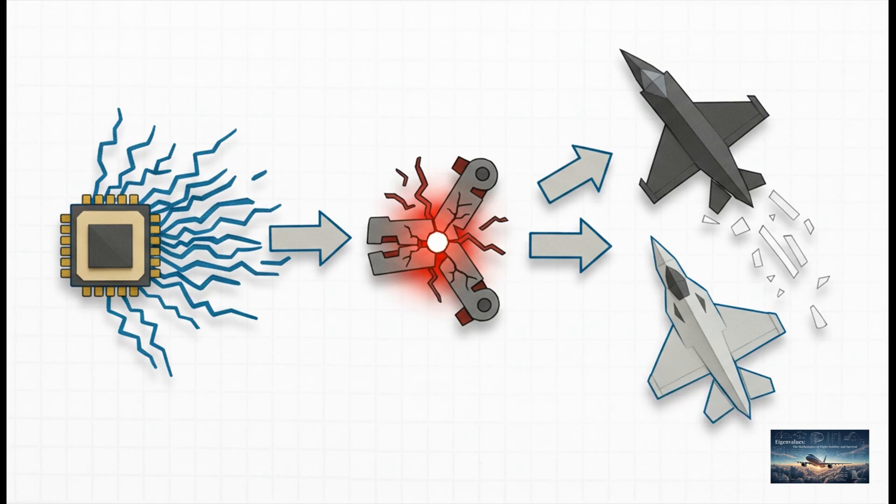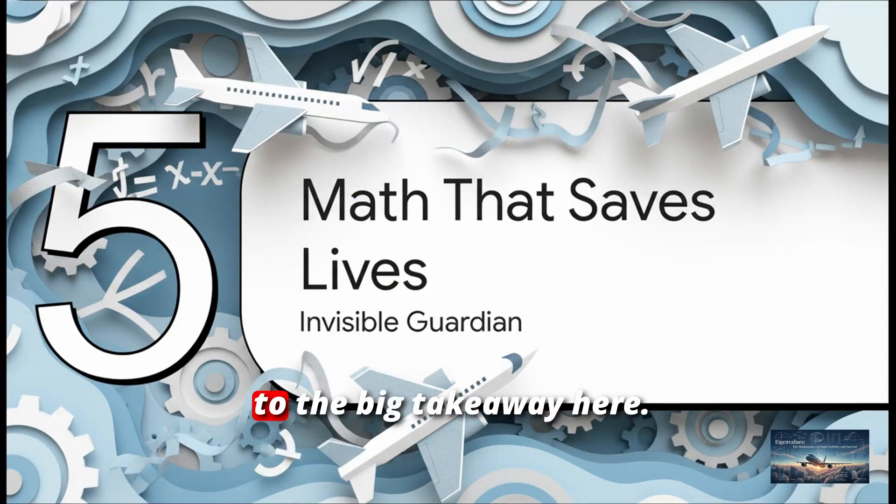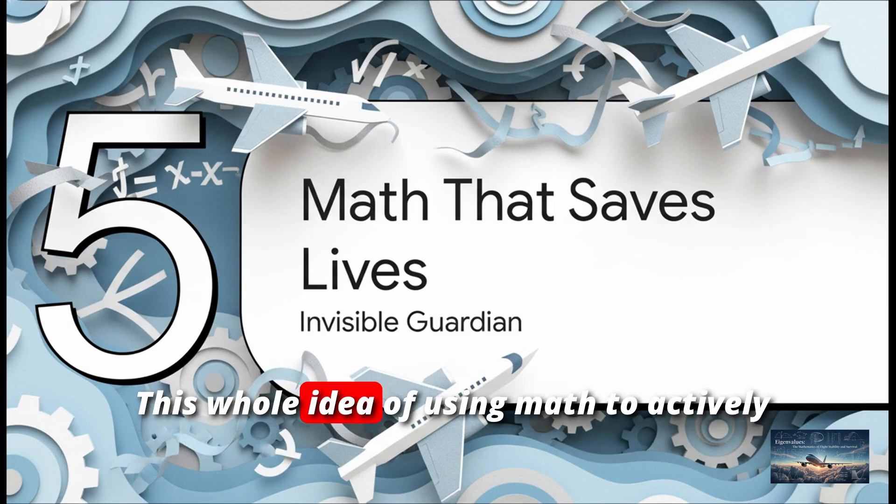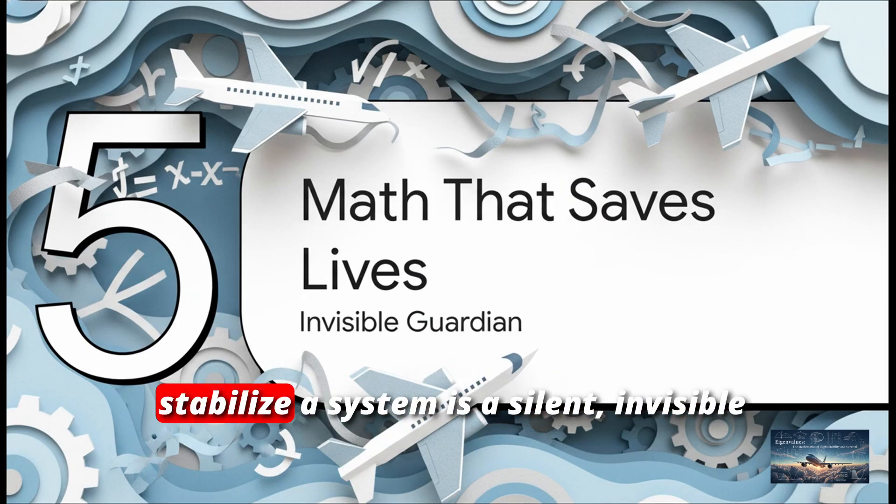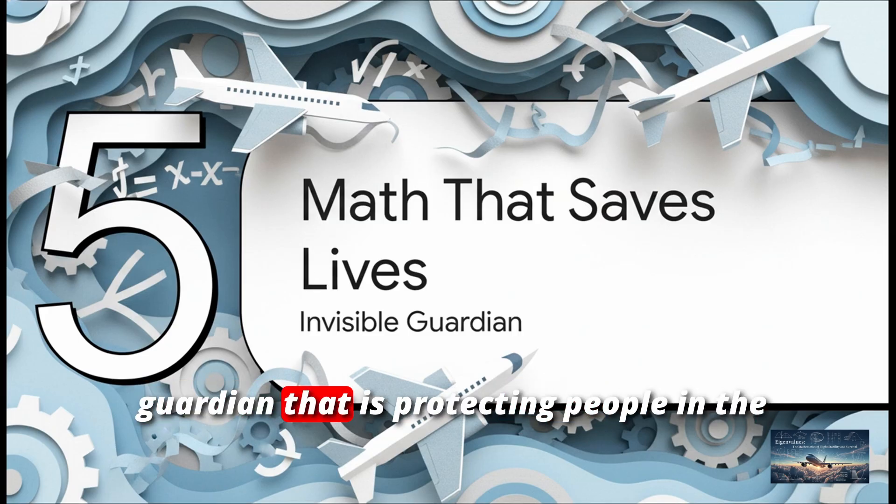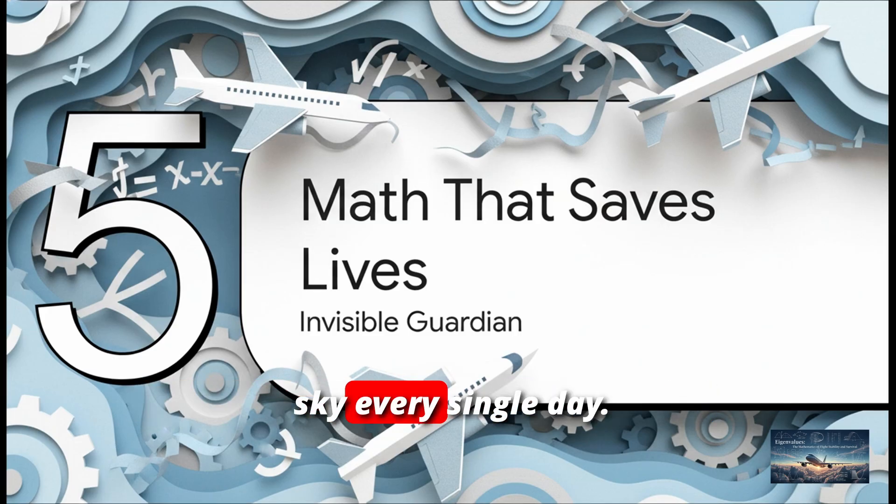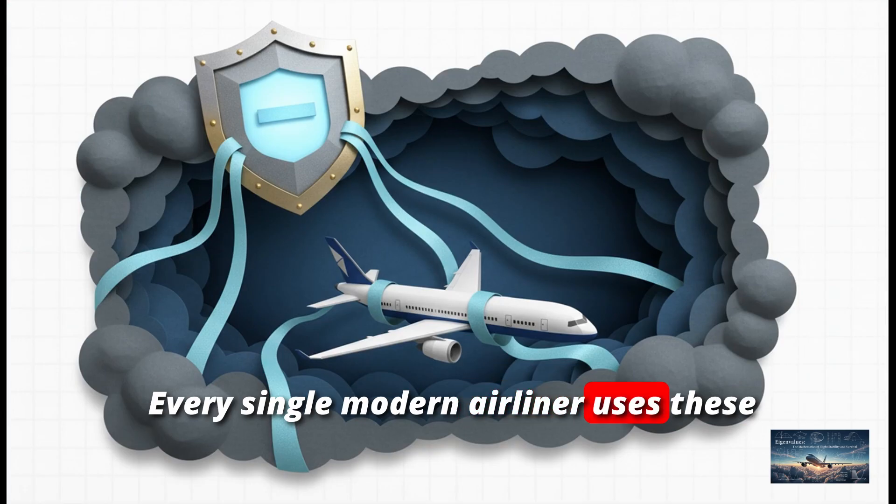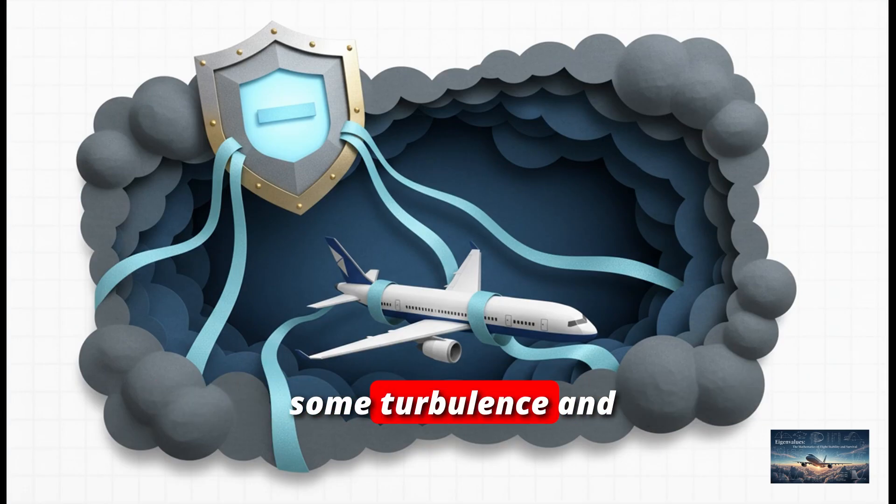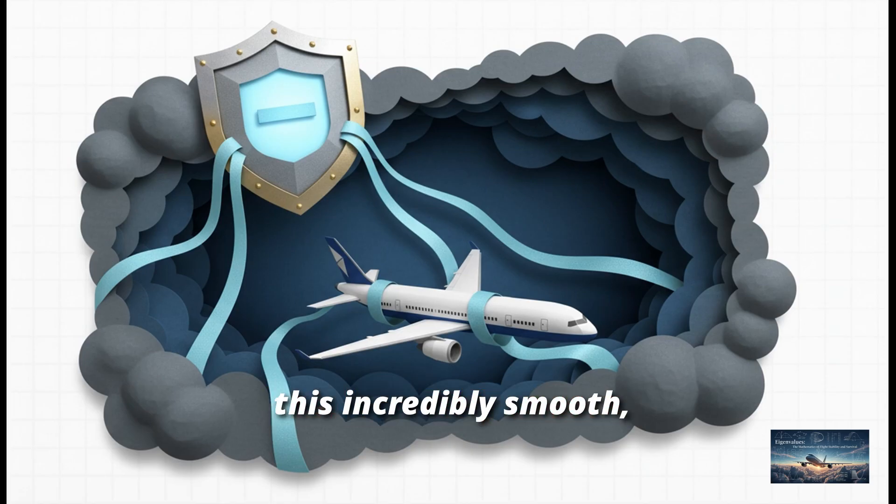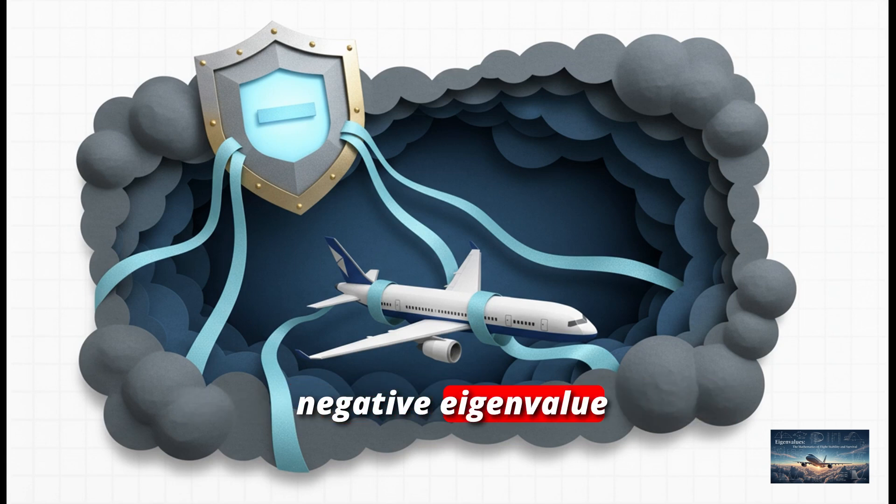It was a brutal reminder that even the most brilliant math has to play by the rules of the real world. And that really brings us to the big takeaway here. This isn't just some cool trick for fighter jets. This whole idea of using math to actively stabilize a system is a silent, invisible guardian that is protecting people in the sky every single day. Every single modern airliner uses these exact same principles in its autopilot. Next time you're on a flight and you hit some turbulence and you feel the plane make this incredibly smooth, crisp correction, that's not just the pilot.